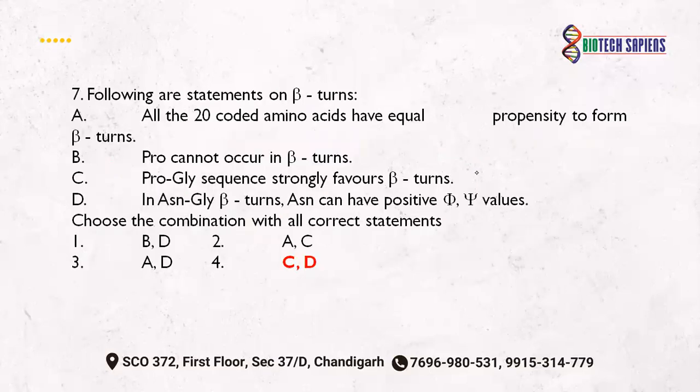Now let's look at statements on beta turns — you should have some knowledge of beta turns. Statement: all 20 coded amino acids have equal propensity to form beta turns — this is not the case. In beta turns, proline and glycine are more common. Glycine's presence makes the turn more flexible, and proline's presence makes it tighter. So equal propensity is incorrect — this statement is wrong.